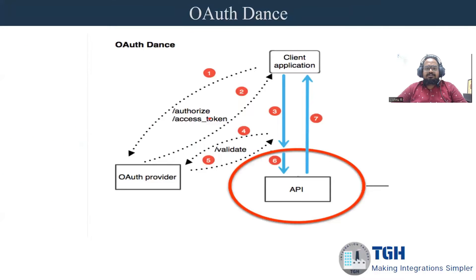So what is this OAuth Dance? It is the authentication process. We will have a client application and an API giving the implementation. When the client application needs access to this API, the request initially goes to an OAuth provider, which provides an access token. The client application then sends a request using the Authorization header with this access token. The API validates whether the access token received is valid, and if it is, it gives a response to the client application.